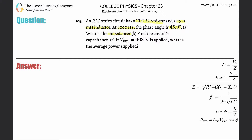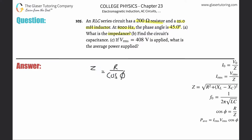There are a couple of ways we can solve this. We don't know the capacitance, so the cosine of the phase angle is going to be equal to the resistance divided by the impedance Z. To find Z, just simply cross multiply these two terms.